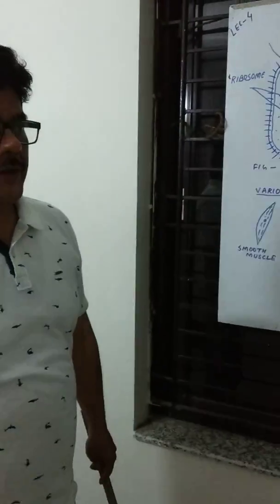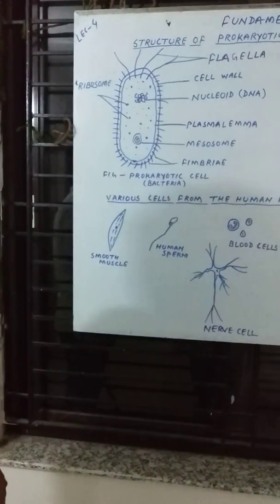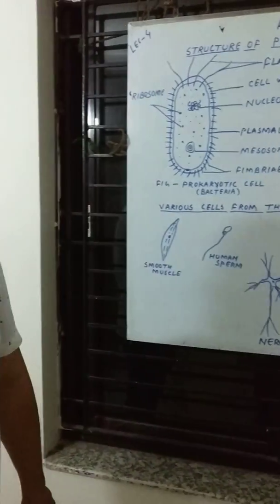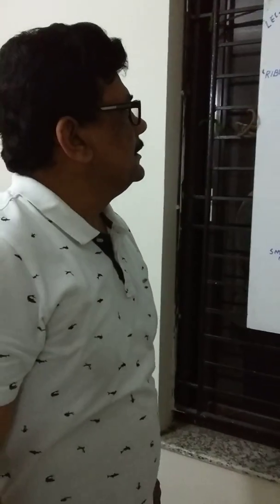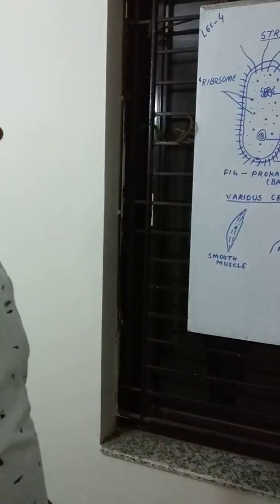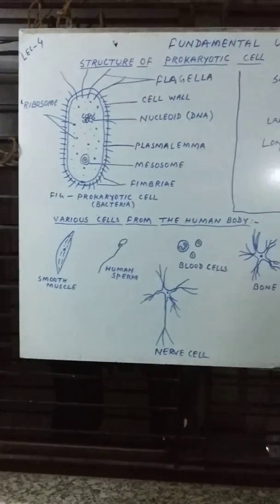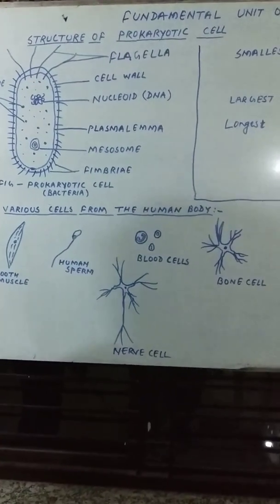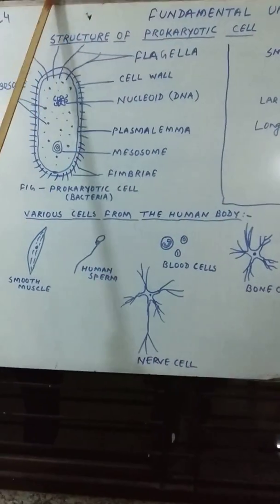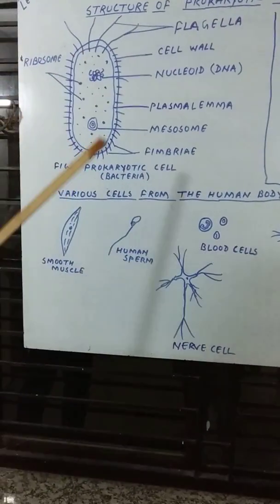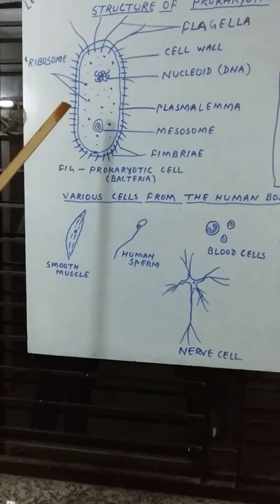Hello, good morning to all of you. Today we are going to discuss the fundamental unit of life in continuation, and today we will especially discuss structure, shape and size of different types of cells. As you can see, this is the structure of a prokaryotic cell.